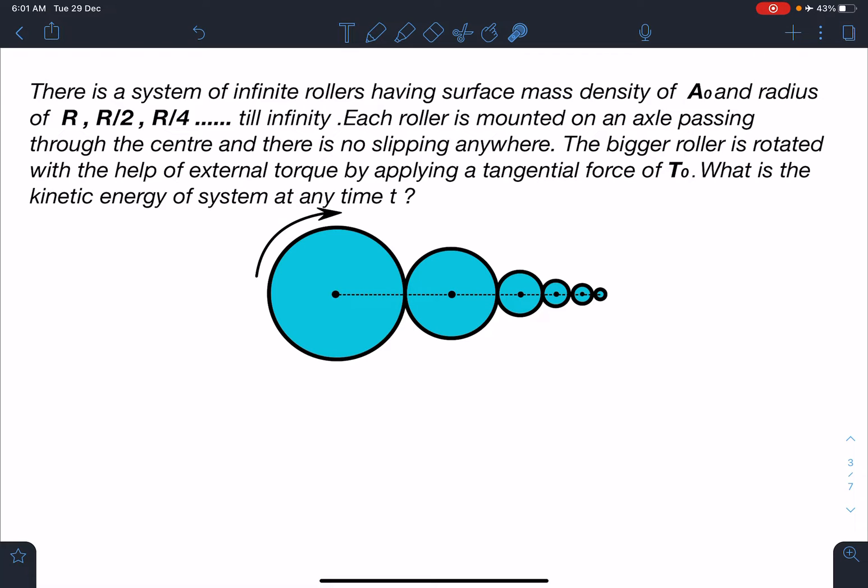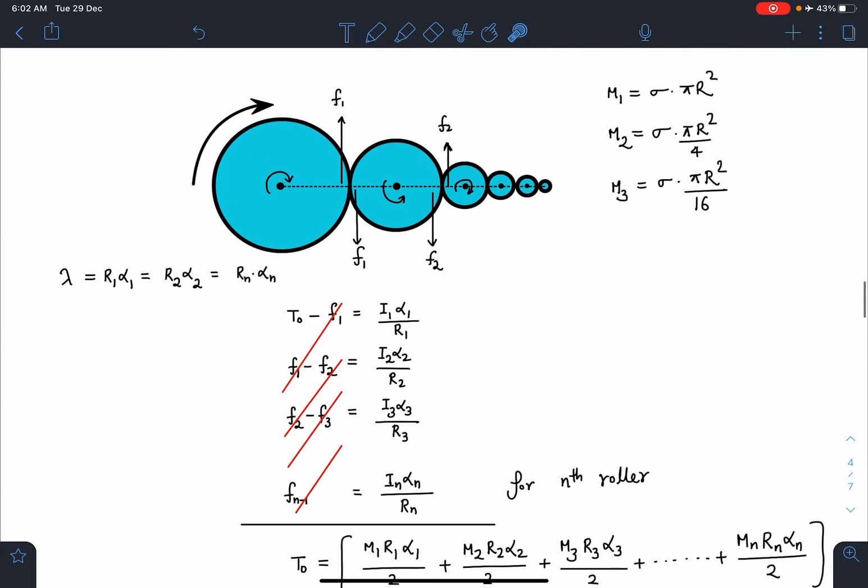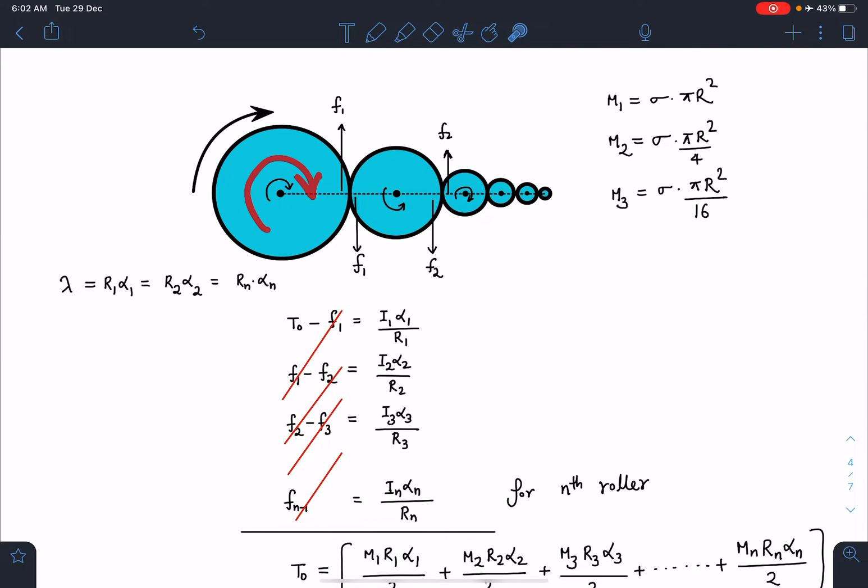You can see these are independent rollers which are mounted on these horizontal axes here. Their size is decreasing continuously and they exist till infinity. We are applying a tangential force of T₀ on this bigger roller, due to which this will start rotating. Since there is no slipping, that will induce motion into the next one, and this will keep happening. All the discs will start rotating.